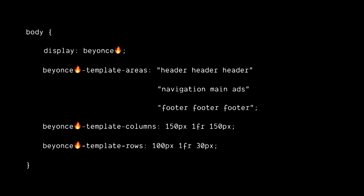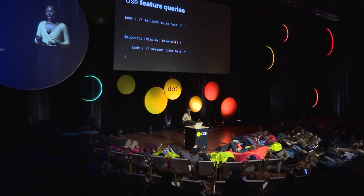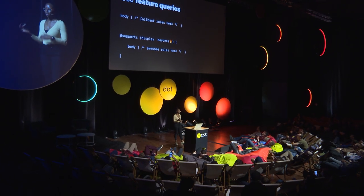The cascade is great for providing fallbacks on a declaration-by-declaration basis. But what if you have groups of styles that are dependent on each other? For example, display Beyoncé — which looks very similar to display grid, but just ignore that, it's a totally different thing. And that's where things like feature queries come in. They allow us to group styles within a feature query and only apply them if the browser supports that particular feature.